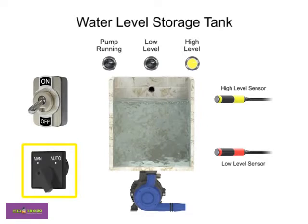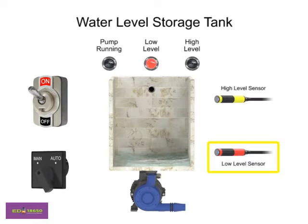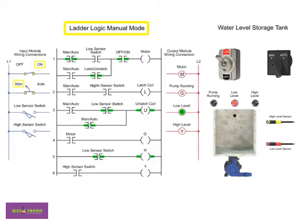In manual mode, the program controls the water level by monitoring the low-sensor switch input. In this mode, the pump motor turns off when the low-sensor switch is off and turns on when the low-sensor switch turns on.